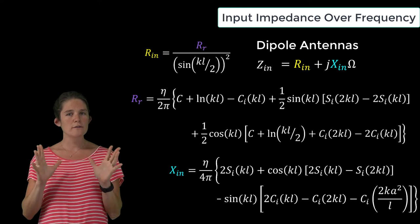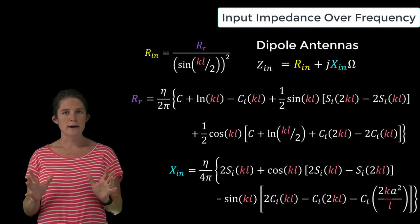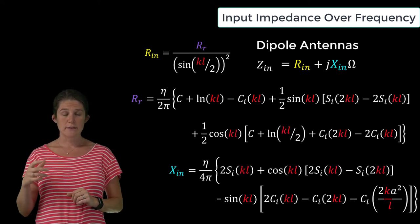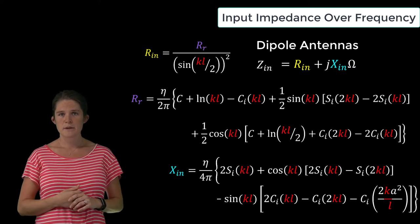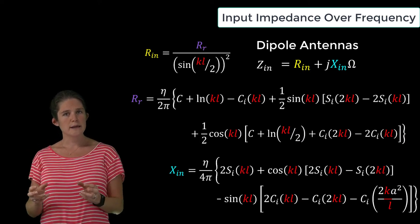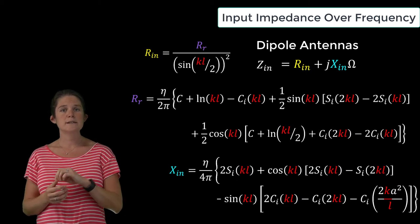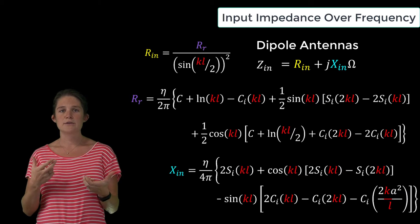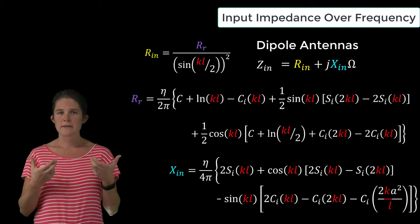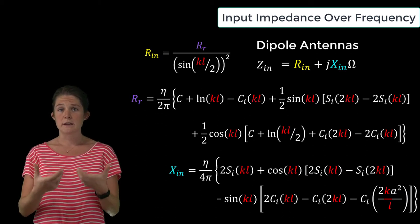Note that all of these equations depend on the product kl, rather than directly on the physical length l of the antenna. This means that the input impedance of the antenna depends on the relationship between the dipole length and the driving frequency, rather than on either of those factors taken individually.